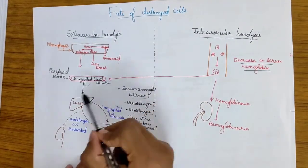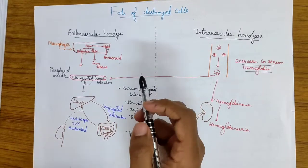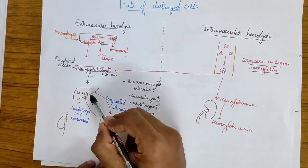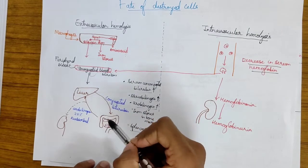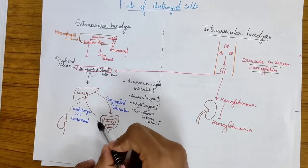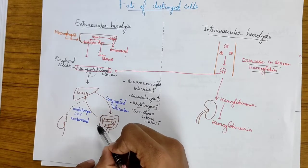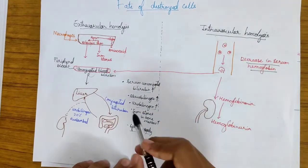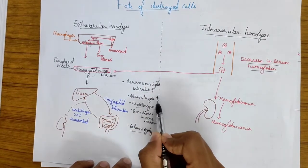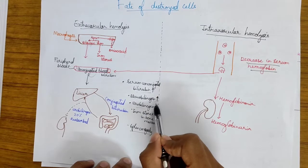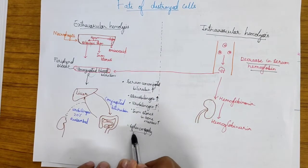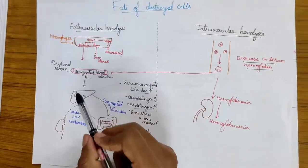This unconjugated bilirubin goes to the liver and gets conjugated through the process of conjugation. The conjugated bilirubin further goes down to the intestine and converts into urobilinogen, urinary urobilinogen, and stercobilinogen. Some amount of urobilinogen is again reabsorbed into the liver. The serum unconjugated bilirubin is increased, stercobilinogen is also increased, urobilinogen also increased, iron stores in the bone marrow is also increased, and splenomegaly occurs due to the destruction of RBCs in the spleen.